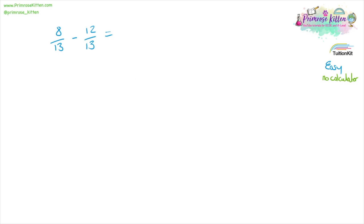Eight over 13 minus 12 over 13. Eight minus 12 over 13 equals minus four over 13.